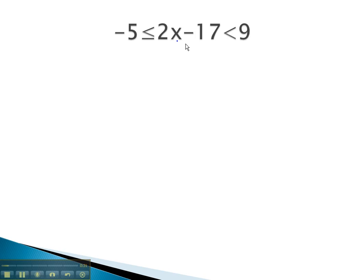For example, in this problem, the variable's in the middle with other stuff between the negative 5 and the 9. We will begin balancing, like always, by adding 17, trying to get the x alone in the middle.